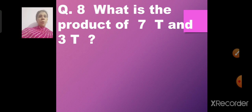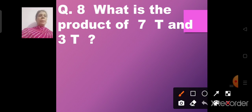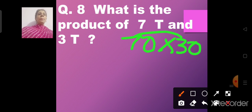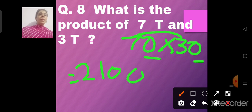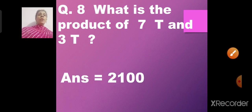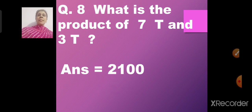Question number 8: What is the product of 7T and 3T — that is 70 and 30? We multiply 7 threes are 21, then we have one zero in 70 and one zero in 30. So 70 into 30 gives us 2100. The product of 70 and 30 is 2100.